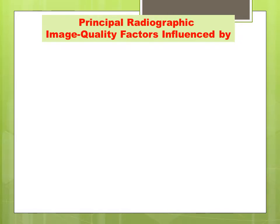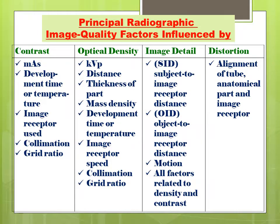The four image quality factors — contrast, optical density, image detail, and distortion — are each influenced by various factors. Contrast is influenced by MAS (mAs), development time or temperature, image receptor used, collimation, and grid ratio.